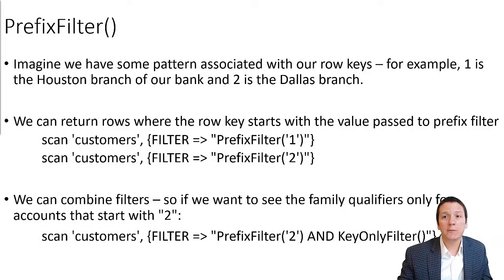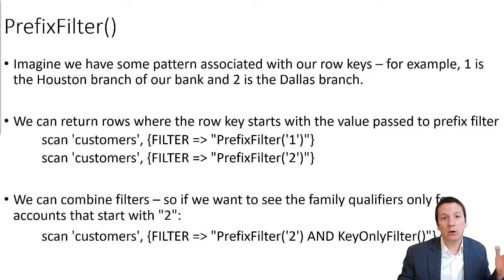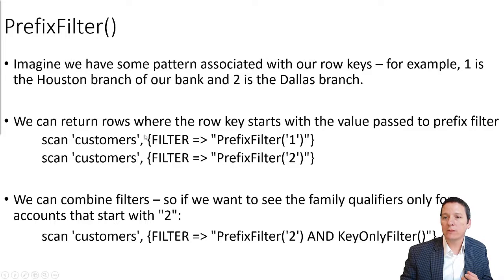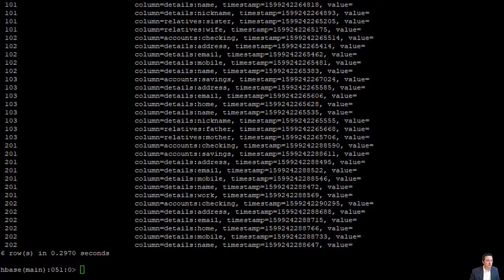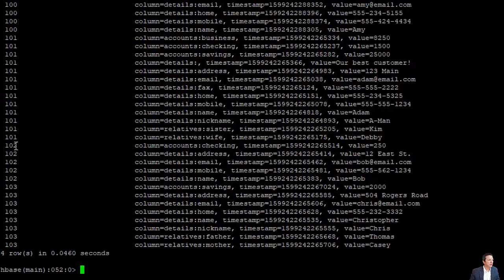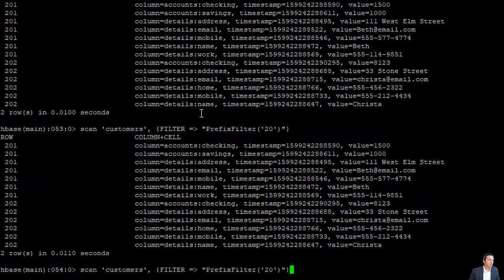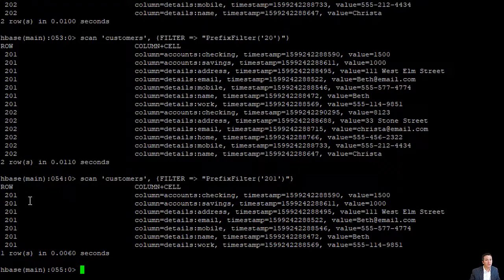The second filter is the prefix filter. Imagine we had some pattern associated with our row keys — for example, all row keys starting with one are associated with the Houston branch of our bank, and all row keys starting with two are associated with the Dallas branch. We can filter results based on the row key starting with some value. In the HBase shell, we say scan customers with filter PrefixFilter('1') and get all accounts starting with one, or PrefixFilter('2') for row keys starting with two. We could also specify more characters, like '201', and get only row keys starting with 201.